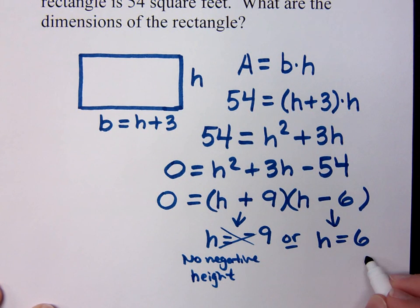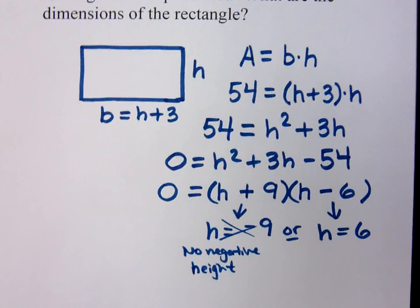So that means my H is six, right? But the question says, what are the dimensions of the rectangle? When I say dimensions of a geometric figure, we're talking about, in this case, you know, base times height, length by width. And so we can just simply say that the dimensions are what?